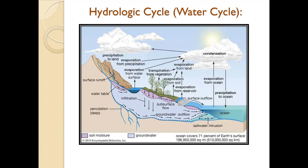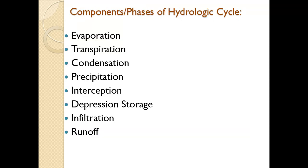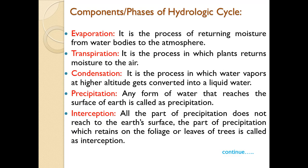From this schematic diagram, one can understand the various phases of the hydrologic cycle in chronological order. The cycle begins with evaporation, followed by transpiration, condensation, precipitation, interception, depression storage, infiltration, and lastly runoff. We will discuss each phase one by one.